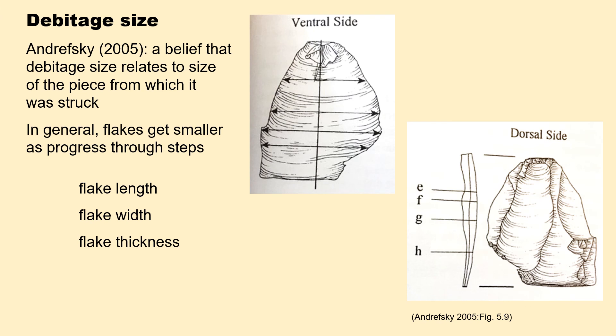Debitage size. Analysts generally believe that debitage size relates to the size of the piece from which it was struck — this generally holds true, but not completely. In general, flakes do get smaller as you progress through the steps in the reduction process. In measuring size, you may measure the length, the width, the thickness. However, as you can see in these illustrations, that can be complicated by measuring width at various points and thickness at various points.